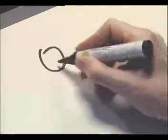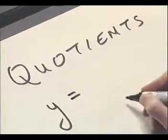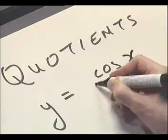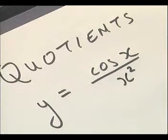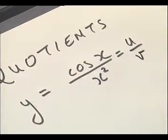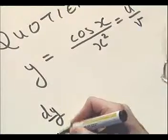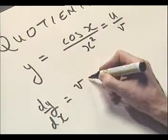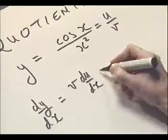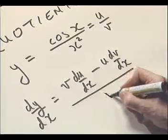Functions often come defined as quotients. So functions come defined as quotients, by which we mean we have one function, cos x, divided by another function — cos x divided by x squared. What we do is we identify that as one function, u, divided by another function, v. This gives us yet another result, another formula that we need to remember: v du/dx minus u dv/dx, all over v squared.